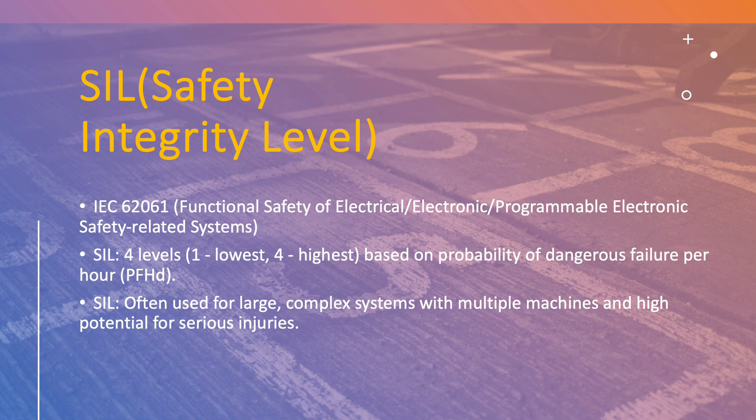Safety integrity level is often used for large, complex systems with multiple missions and high potential for serious injuries. For example, in manufacturing industries, packing is one system and transportation is another system — these two systems are interlinked. Once packing is finished, it transfers to the transportation system, so this is a multiple-mission scenario where we use safety integrity level based on risk assessment.